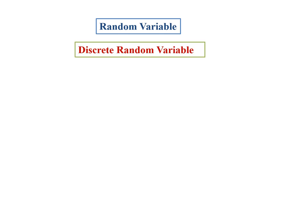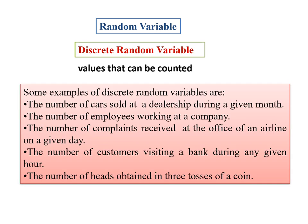Random variables can be discrete — values that can be counted. Some examples of discrete random variables are: the number of cars sold at a dealership during a given month, the number of employees working at a company, the number of complaints received at the office of an airline on a given day, the number of customers visiting a bank during any given hour, and the number of heads obtained in 3 tosses of a coin.